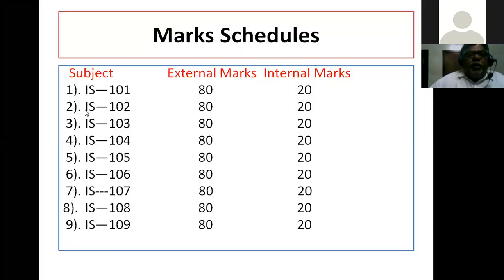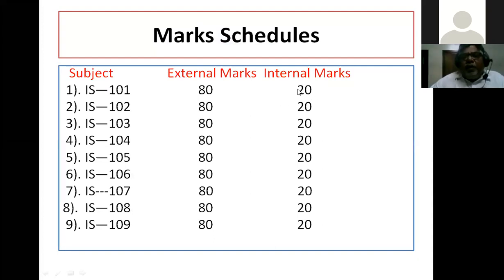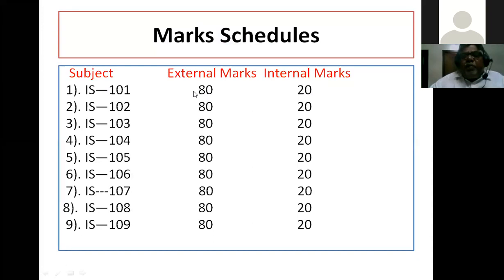Subject IS101 contains external marks 80 and internal marks 20. For internal marks, IAFSC will provide those marks — out of 20, you will surely get 18 to 19 or 20 marks. For the external exam, it is a theory paper. The minimum pass mark is 28. If you get 33 out of 80, you will get first class easily. For project work IS109, the weight is 80 plus 20, totaling 100 marks.